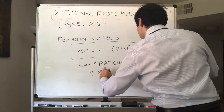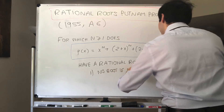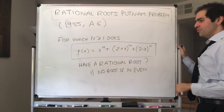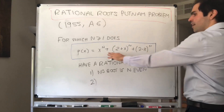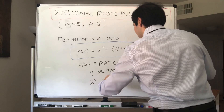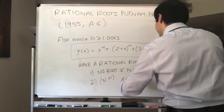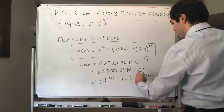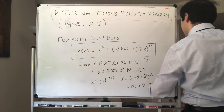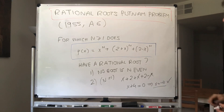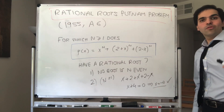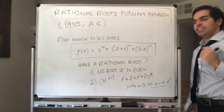So there is no root if n is even — you literally can't, because there is no rational root. What about for n equals 1? It turns out yes, there is a rational root, because then you just have x plus 2 plus x plus 2 minus x, which simplifies to x plus 4, and the only way this is zero is if x equals minus 4.